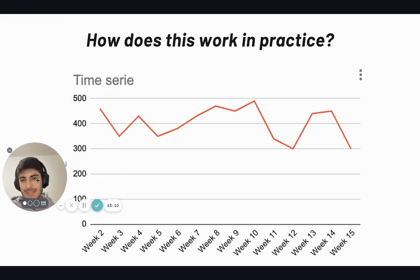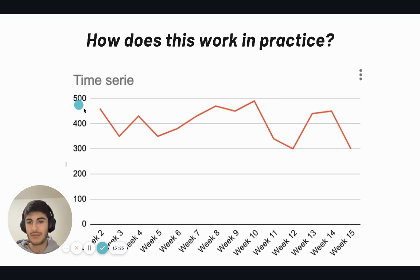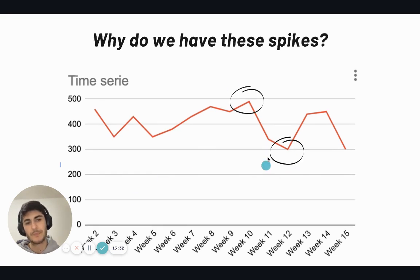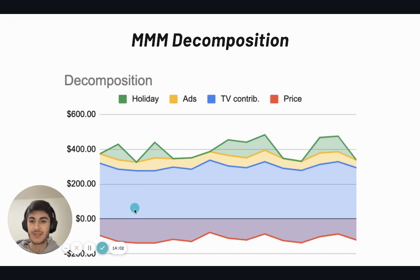How does it work practically? We start with time series sales data — sales by week. From this data alone we can't see much, but I notice two spikes: one positive and one negative. I want to learn why there are these two opposite spikes. What we use is a tool called marketing mix modeling decomposition, which estimates the contribution of each factor we included — how much holidays impacted, how much ads impacted, how much TV spend impacted, and how much price impacted.